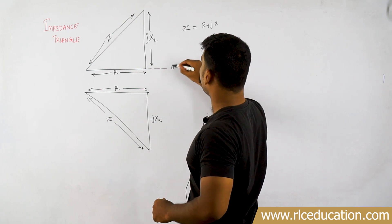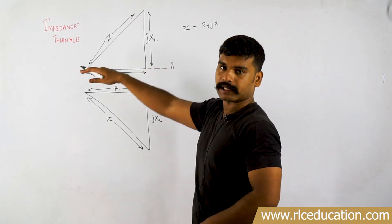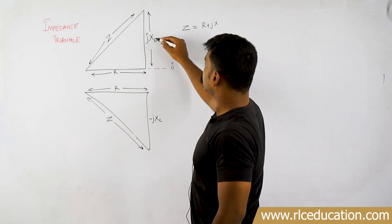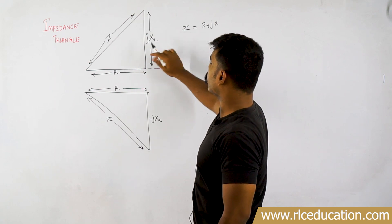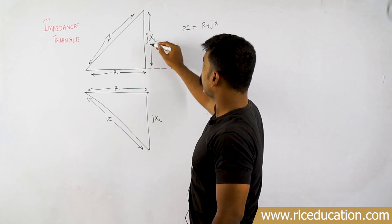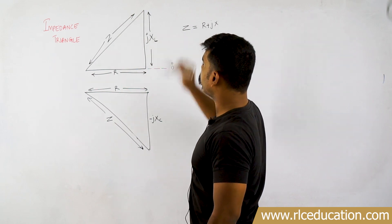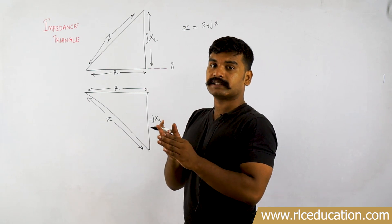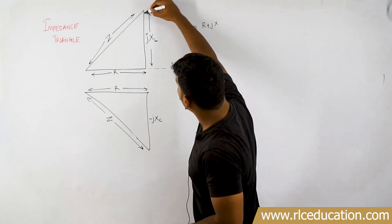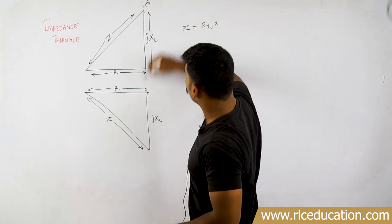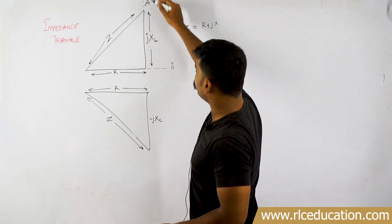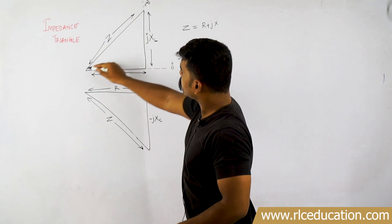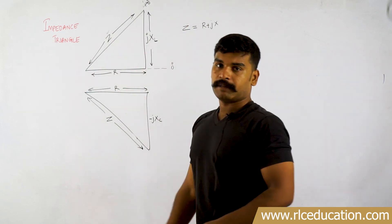This is the zero degree line. Resistance is always on the zero degrees line. Reactance Jx — this is inductive reactance. If your reactance is just plus Jx, it is an inductive reactance. J represents that that particular quantity is at plus 90 degrees. This is plus 90 degrees; if this is zero, this is plus 90 degrees and minus 90 degrees will be downside. So Jxl, and the closing side will be the impedance.